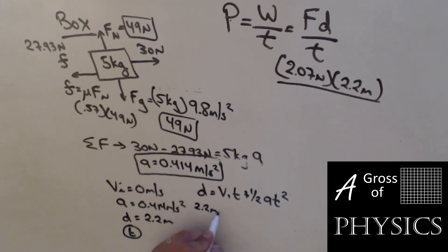So 2.2 divided by 1/2 divided by 0.414, take the square root. You get 3.26 seconds.